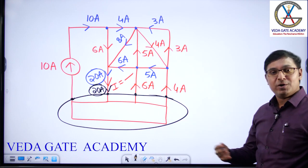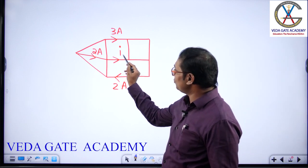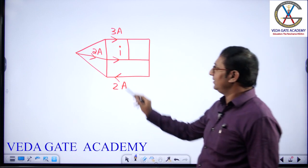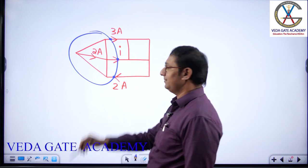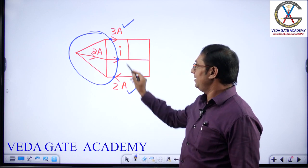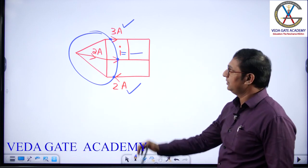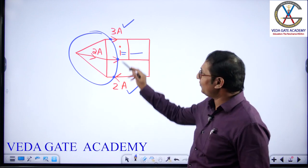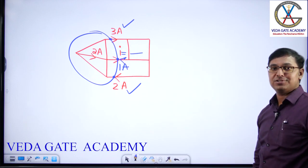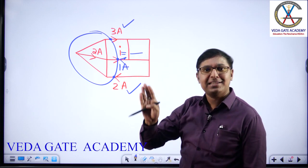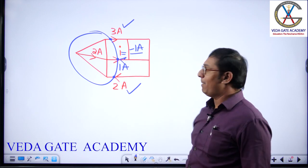Let us do one more question on KCL before going to KVL. The examiner's interest is to find the value of I. Using a Gaussian surface touching at several points, you know two currents. 3 amps is coming out, 2 amps is entering — to satisfy KCL, 1 more amp must enter. So 2 plus 1 equals 3 amps entering and 3 amps coming out — KCL is satisfied. The 1 amp is entering in the direction opposite to I, so the value of I is minus 1 ampere.